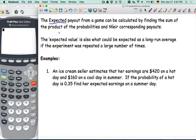The expected payout from a game can be calculated by finding the sum of the product, so product means multiply, of the probabilities and their corresponding payouts. Casinos love this.